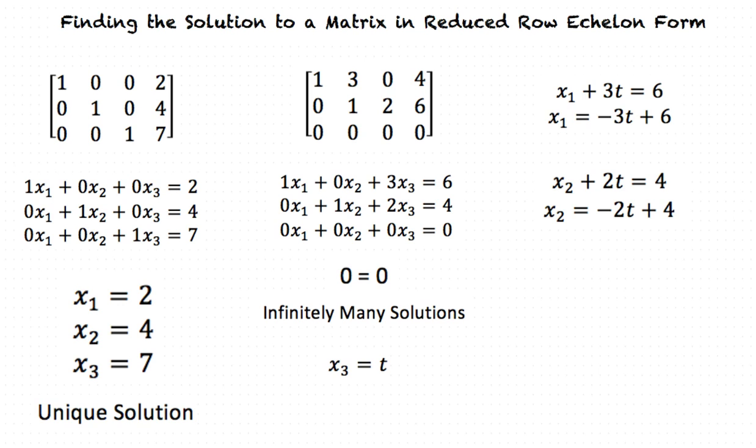Now we can write our final solution as x1 is equal to negative 3t plus 6, x2 is equal to negative 2t plus 4, and x3 is equal to t. t is any real number.